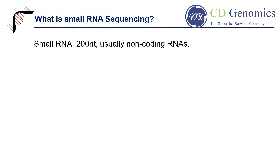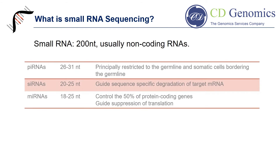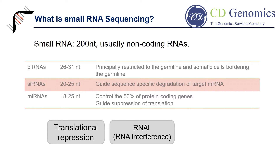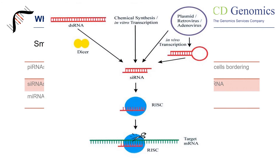Small RNAs are less than 200 nt in length, and are usually non-coding RNA molecules. The most focused small RNAs include piwi-interacting RNA, small-interfering RNA, and micro-RNAs. These small non-coding RNAs are associated with post-transcriptional gene regulation, through translational repression or RNA interference. RNA interference is the process to guide sequence-specific degradation of target mRNA.